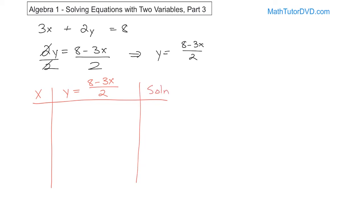Let's construct the table of x values, using whole numbers 0, 1, 2, 3, and so on. When x is equal to 0, y is (8 minus 3 times 0) over 2. Since 3 times 0 is 0, it becomes 8 over 2, which is 4. So when x is 0, y is 4. The ordered pair (0, 4) is a solution, and these are whole numbers, so it's part of our solution set.